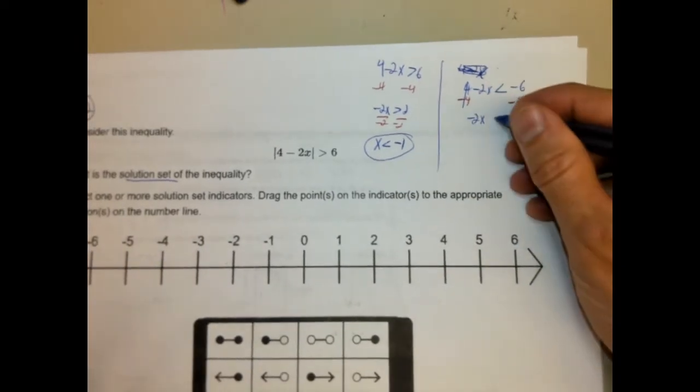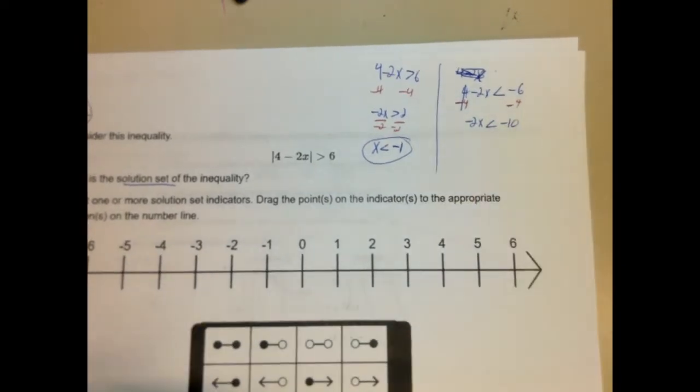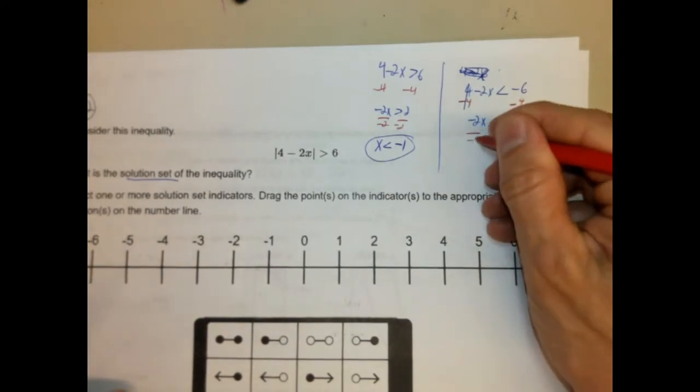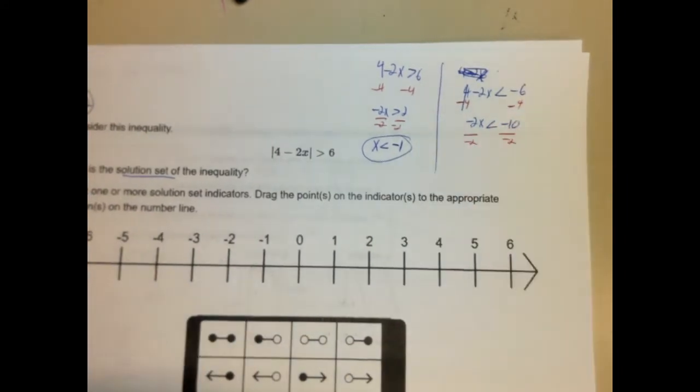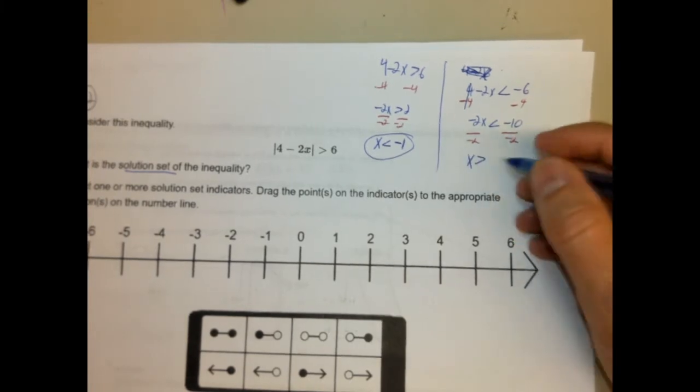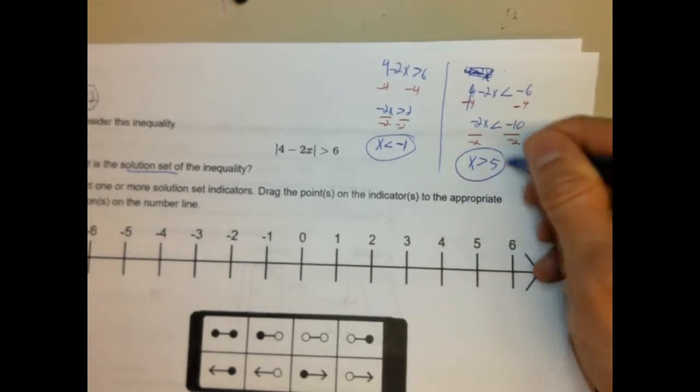Negative 2x is less than negative 10. Now again, we're going to divide by a negative. So because we're dividing by a negative, we have to change the direction of the inequality symbol. So this becomes x is greater than 5.